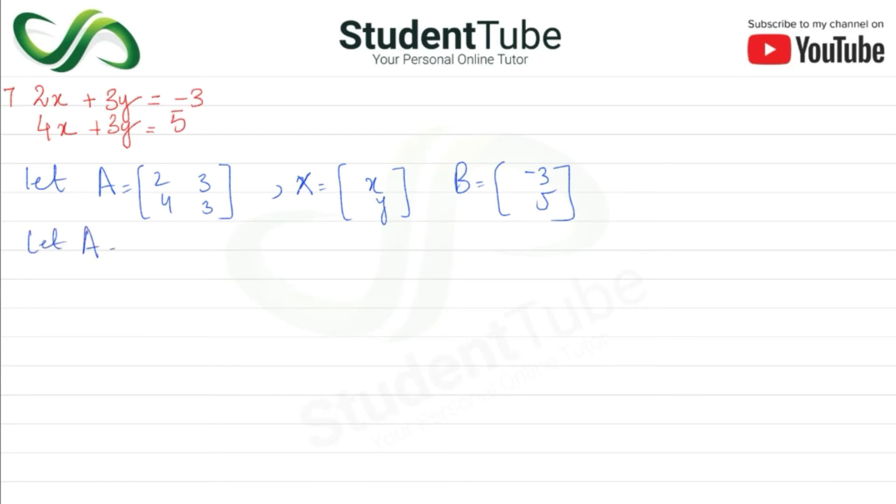Let A is equal to 2, 3, 4, 3. So 2 multiply by 3 minus 4 multiply by 3. 2, 3 is 6 minus 4, 3 is 12. So we have to solve minus 6.